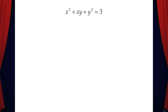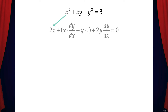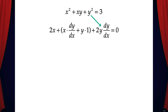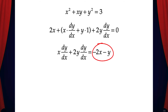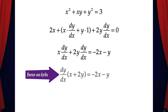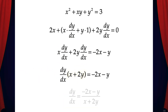So the first thing we need to do here is find dy/dx. Let's go term by term. The derivative of x squared is 2x. The derivative of xy is x dy/dx plus y times 1 by the product rule. The derivative of y squared is 2y dy/dx, and the derivative of 3 is 0. Now we can group the terms with dy/dx. I've moved the 2x and y terms to the right side of the equation and kept the terms that contain dy/dx on the left side.